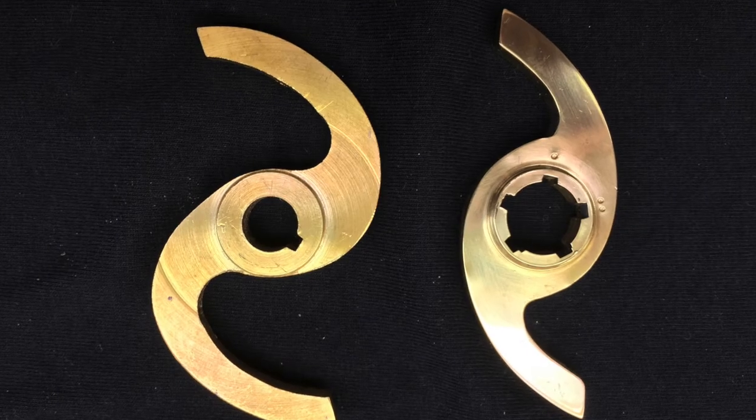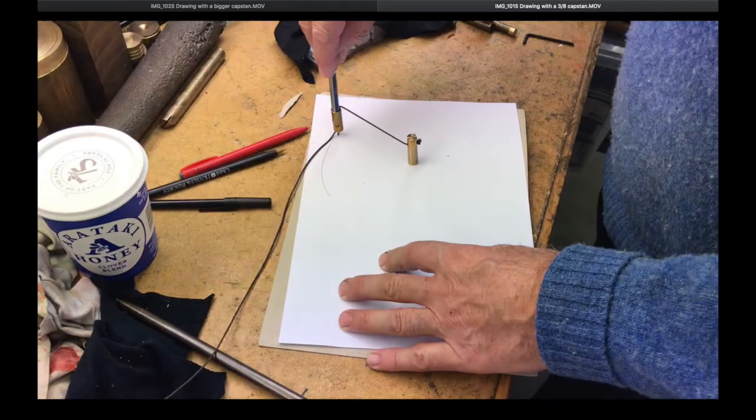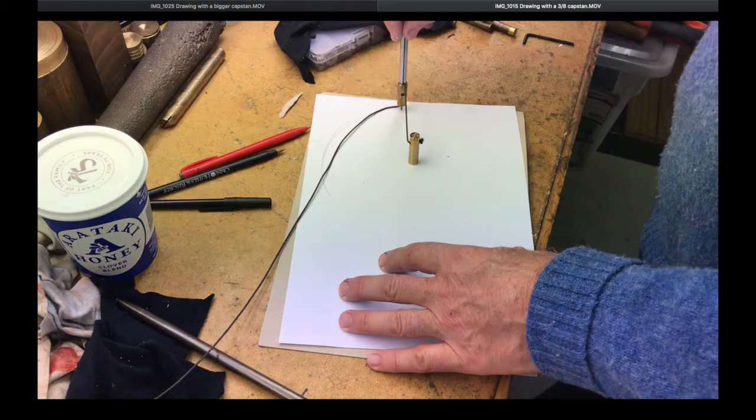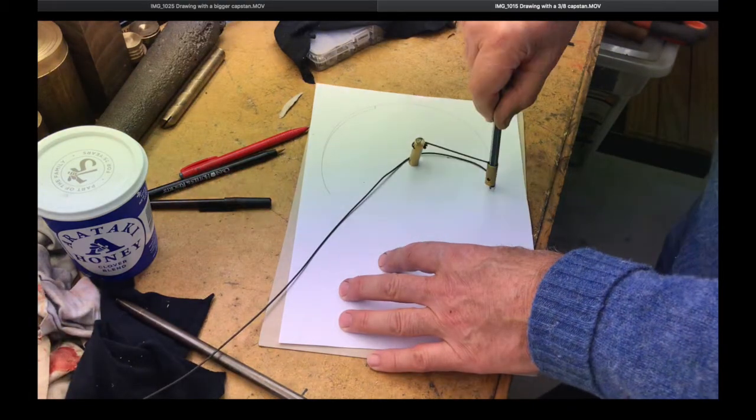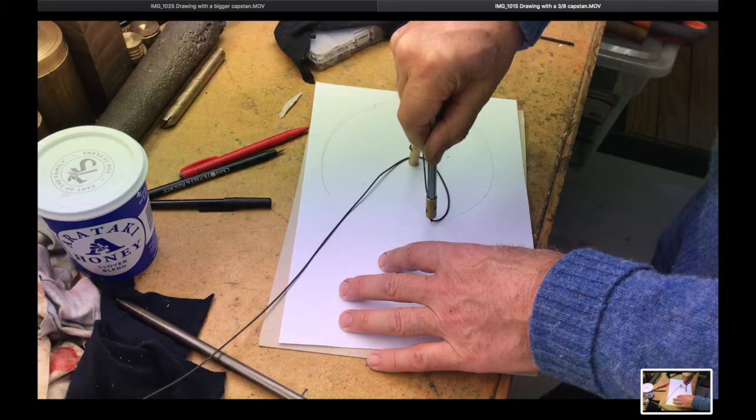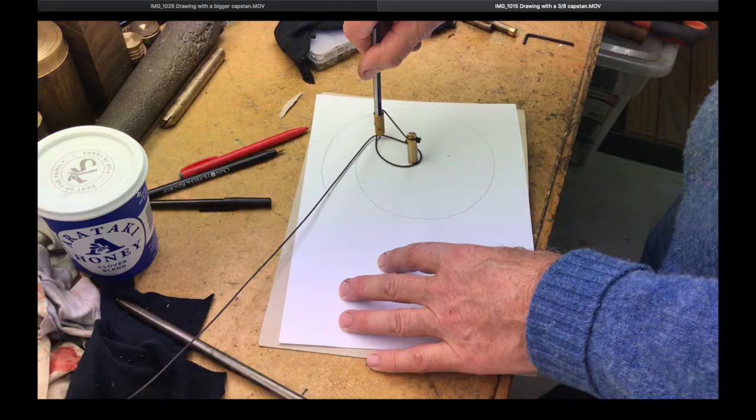The design of these cams uses an involute curve, which is actually quite common in engineering projects. It was developed by Archimedes in 300 BC, so it has been around for 2300 years.